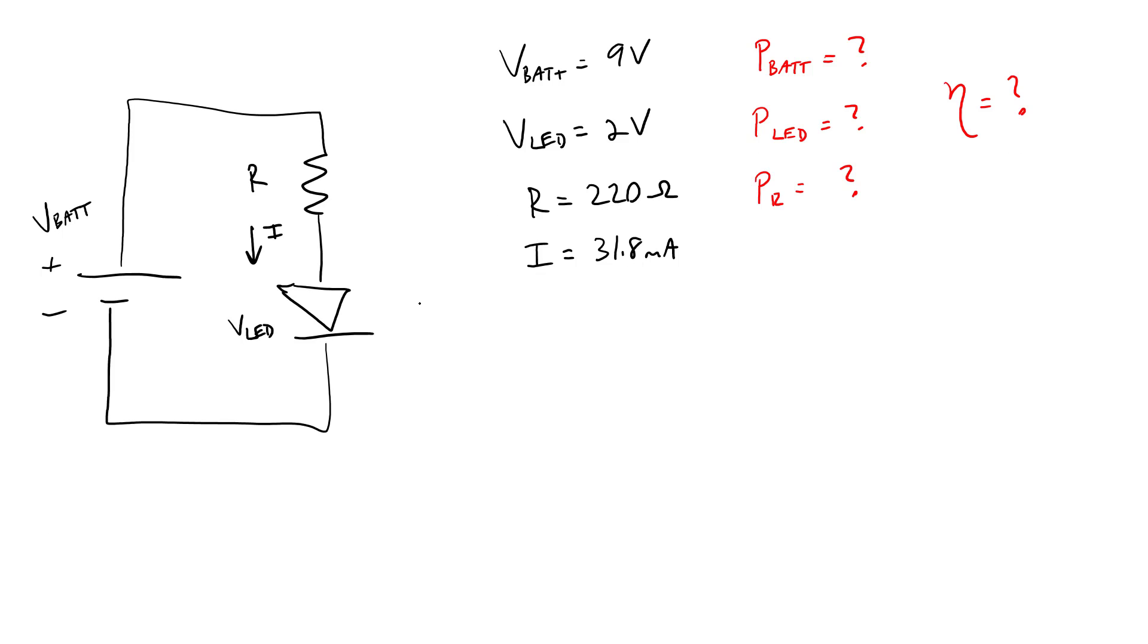The main equation we are going to need is P equals IV, or electrical power in watts equals current in amps times voltage in volts. Since this is a simple circuit where all three components are in series, we know that the current I through all three of them is always going to be the same, but the voltage drop across each component will be different.